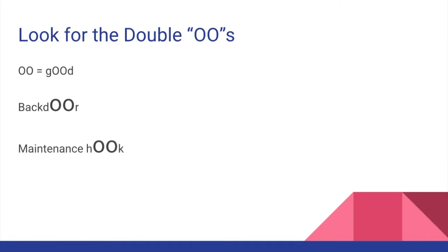The term maintenance hook is also used interchangeably with backdoor and trapdoor, which conveniently also has the double O. Trapdoor is good, and it means the same thing as backdoor and maintenance hook. It's related to developers, and it's a good thing.